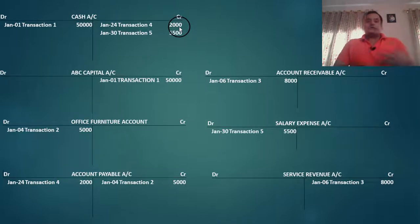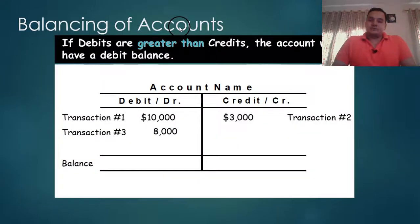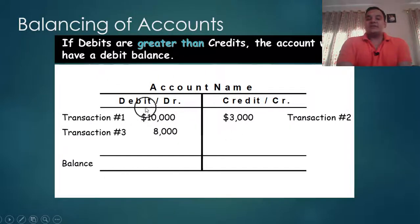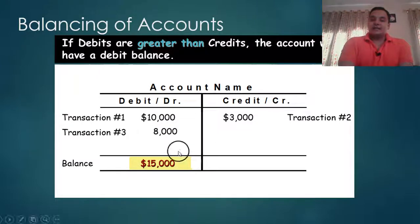If debit is more, it is a debit balance; if credit is more, it is a credit balance. If debits are greater than credits, the account will have a debit balance. For example, on the debit side we have 18,000 (10,000 plus 8,000) and on the credit side we have 3,000, so the balance will be 15,000. That is 18,000 minus 3,000, so the debit balance is 15,000.